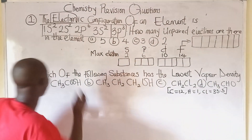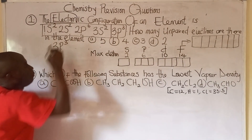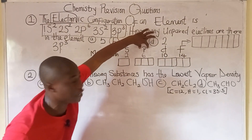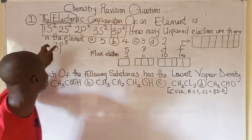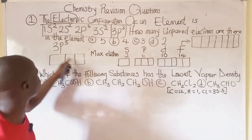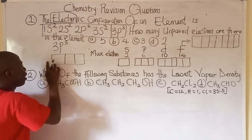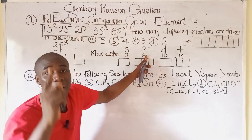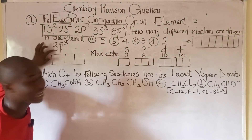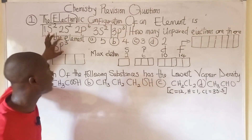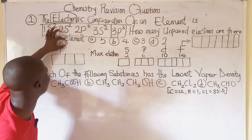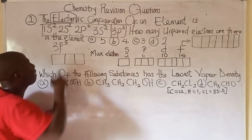To answer this question we take note of the last orbital, which is 3p³. This last orbital falls on the p orbital. For the p orbital, as stated earlier, we draw three boxes. We already know the maximum number of electrons in the p orbital is 6, but here we only need to focus on the superscript number — and in this case that number is 3, which tells us the number of electrons.